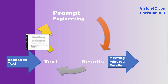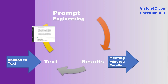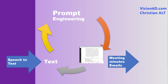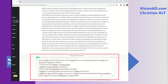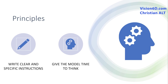Prompt engineering follows an iterative and collaborative process where the user provides text examples, refines instructions, and adjusts prompts to achieve optimal results. I use two fundamental principles: formulating a clear prompt, and giving ChatGPT some time to think to provide accurate responses.